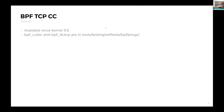What's the status? This is available since kernel 5.6. I've also landed the CUBIC and DCTCP examples in the self-test directory. If you're interested, please take a look to see how they're written in BPF.